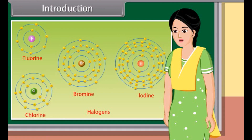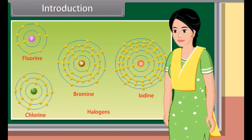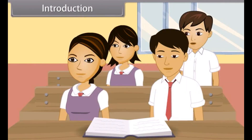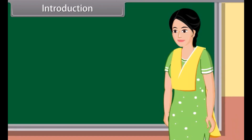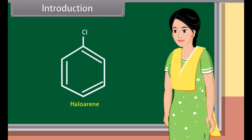Can anybody tell me what haloarenes are? Yes, ma'am. Haloarenes are the molecules in which halogen atoms are bonded with carbon atoms that are a part of an aryl ring. Very good, Rohit. In this lesson we learn more about haloalkanes and haloarenes.